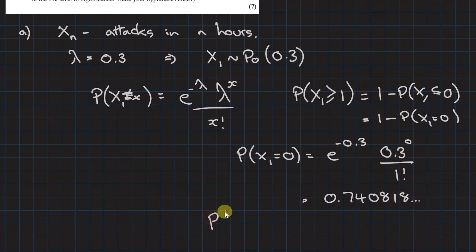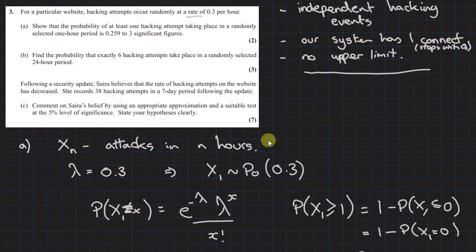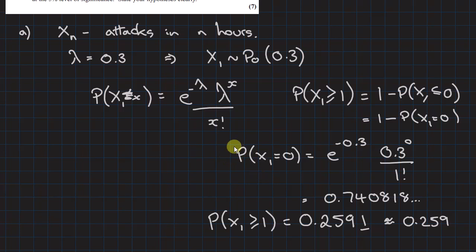That gives me 0.7408. So P(X1≥1) is 1 minus this which is 0.2591, so that approximates to the answer they're giving, 0.259. There's quite a lot of overkill in that solution but that's all the steps needed. The marks for this one were one for showing the Poisson and one for doing the final calculation.